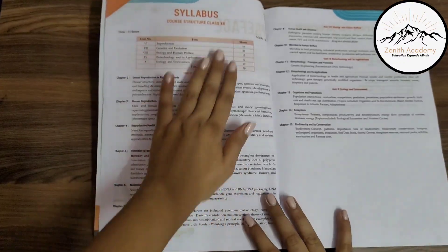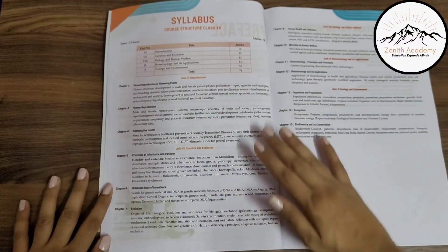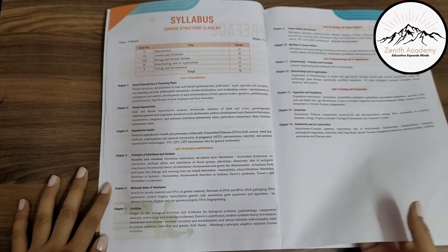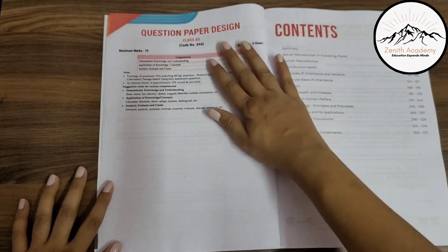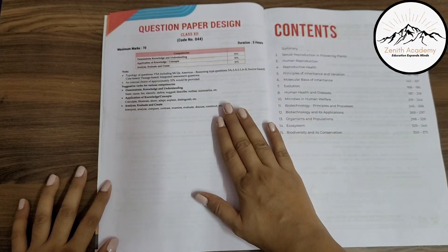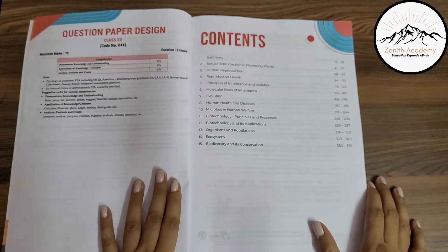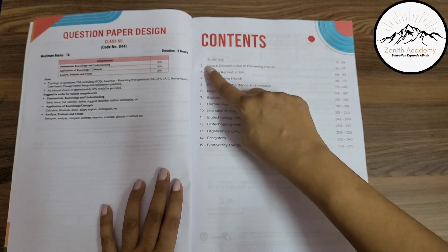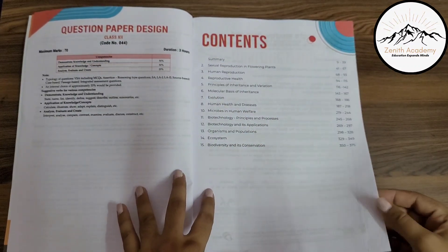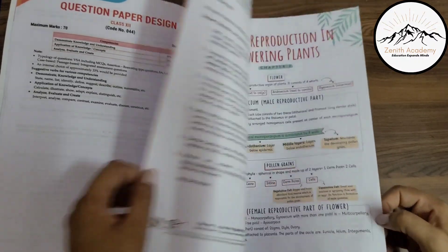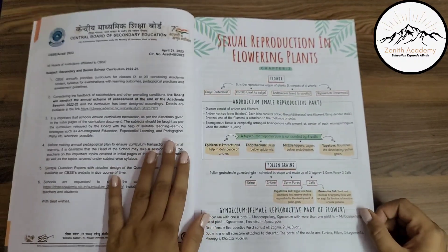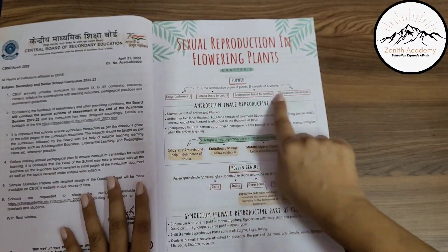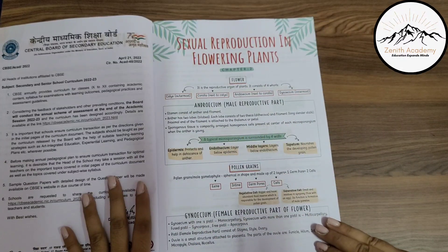In the first few pages, they have given you the complete syllabus, so you don't have to go to other websites. This is the question paper design, and there are 15 chapters covered. Questions will be asked from the second chapter onwards. The circular from the board is also included.